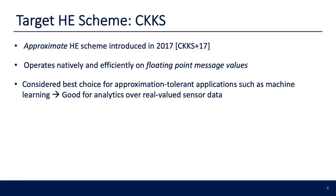When creating SEAL Embedded, we needed to decide on an HE scheme. We chose CKKS, introduced in 2017, which enables approximate homomorphic encryption. CKKS offers the advantage that it operates on encrypted floating-point or real-valued messages much more efficiently than other popular HE schemes like BGV or BFV. It is considered the best scheme for applications that operate over floating-point data or can tolerate approximate results, such as machine learning — the kinds of analytics most likely to be used over IoT sensor data.